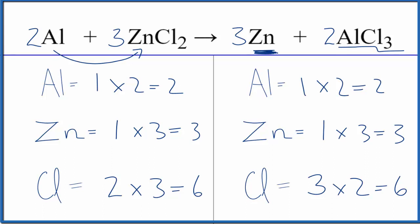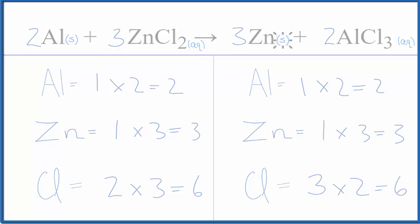If you wanted to write the states, they would look like this. This is Dr. B with the type of reaction and balanced equation for aluminum plus zinc chloride. Thanks for watching.